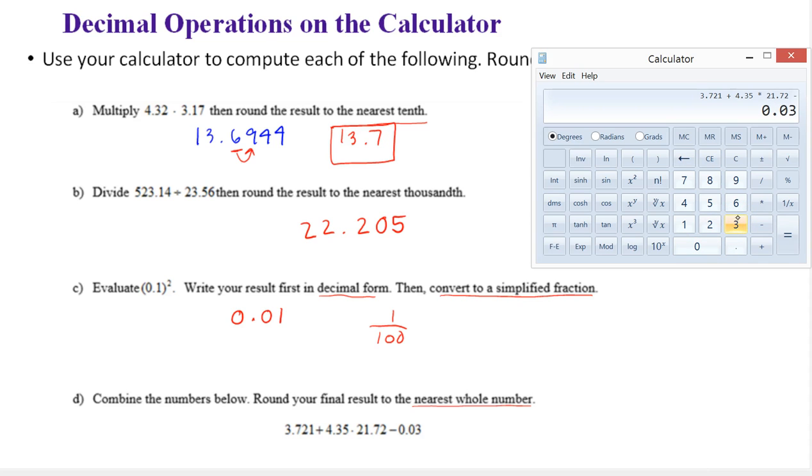Okay. Notice I put this entire expression in. Remember from the order of operations that if we were going to do this by hand, or if you wanted to do this one operation at a time, you'd need to do the multiplication first. The calculator knows this. So I could put this whole expression in.